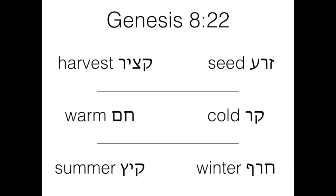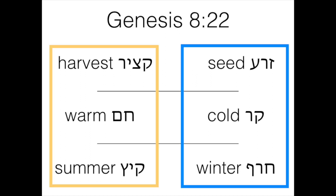So based on all of this, we have a new understanding of Genesis 8:22. Yahweh isn't saying there are six seasons that he's going to keep forever. No, he's saying that the two seasons in the land of Israel will be kept forever — and they are the harvest, warm summer, and the seed, cold winter. So what this means is that the three cases of antithetical parallelism are actually all describing the same thing. One way is harvest and seed. Another way is warm and cold. Another way is summer and winter. And this threefold repetition is a poetic way to draw emphasis on these seasons.